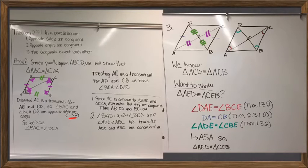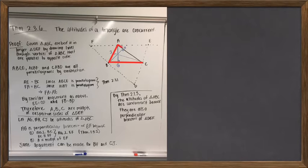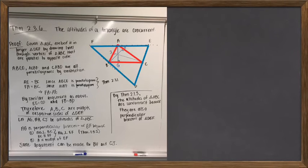That's an important result we use a couple more times. In particular, Theorem 2.3.6 shows that the altitudes of any triangle are concurrent. The altitudes are the lines joining each vertex to the opposite side at a 90-degree angle. This is a really clever proof: it takes our original triangle ABC and situates it inside a larger triangle DEF, constructed by drawing lines parallel to the opposite side through each vertex. So EF, for example, is parallel to BC and passes through vertex A, and so on.